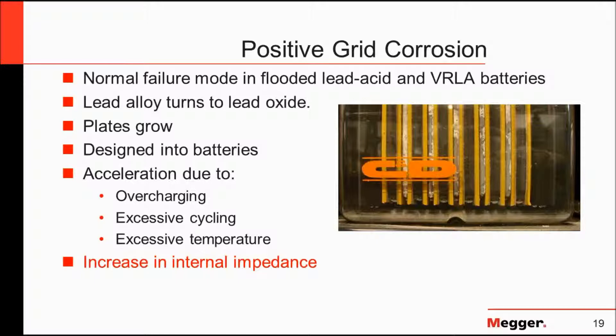Starting, lighting, and ignition batteries are typically used in automotive applications. These are lead antimony designs with strong plates for repeated cycling effects of heat, discharge, and charging. They typically have thinner plate surfaces, meaning they can deliver high volumes of current in a short period of time. They are only meant to be discharged in small amounts and are not good for deep cycling applications.